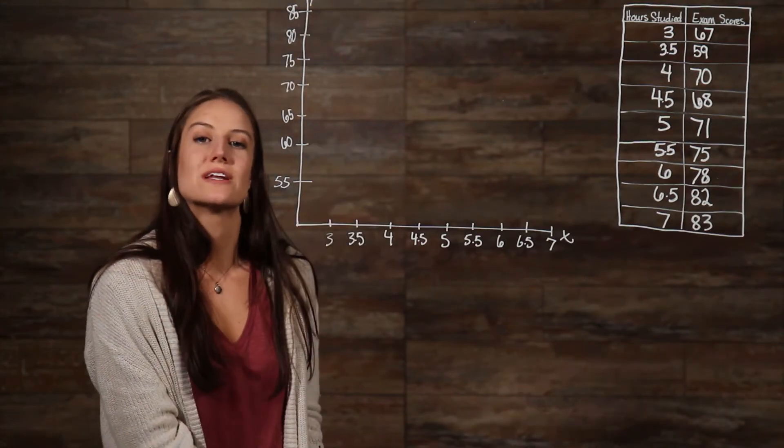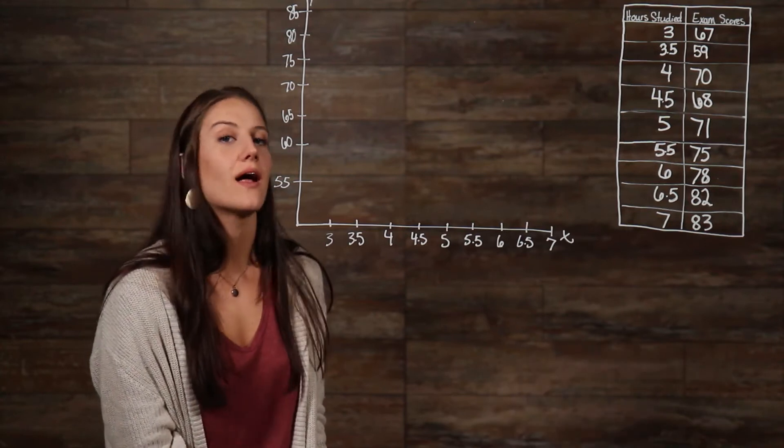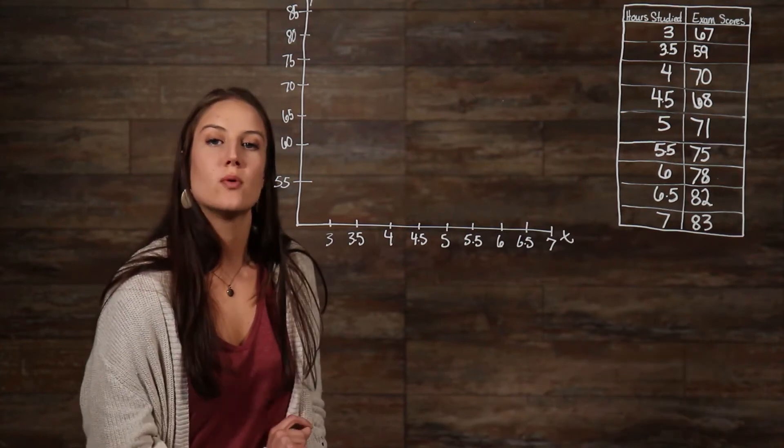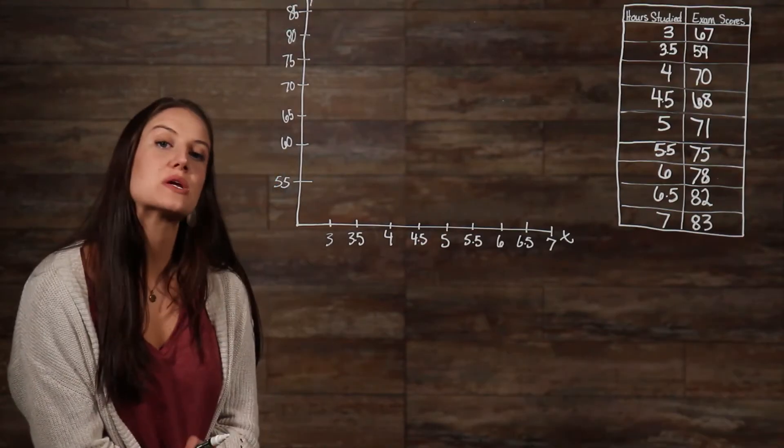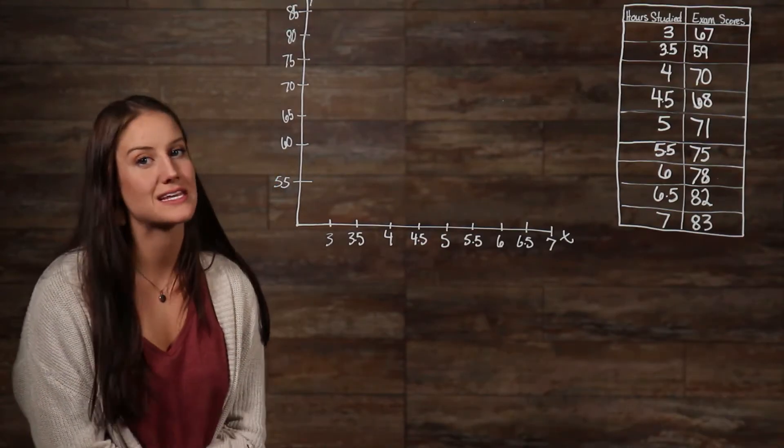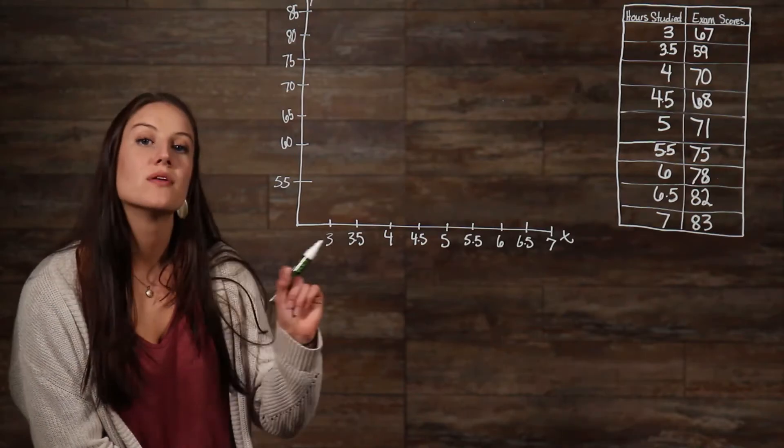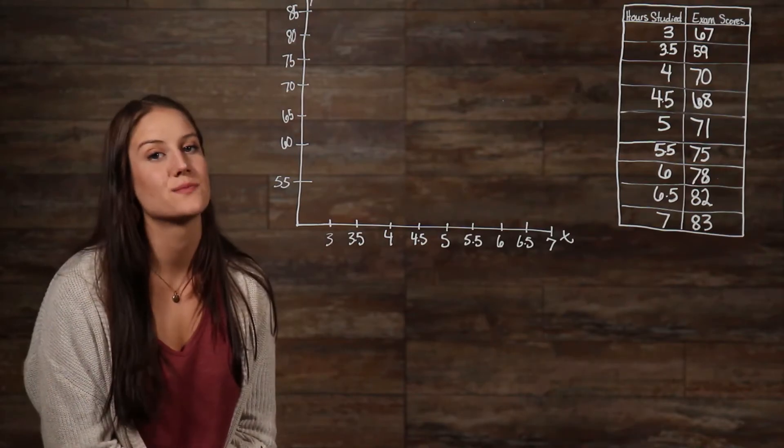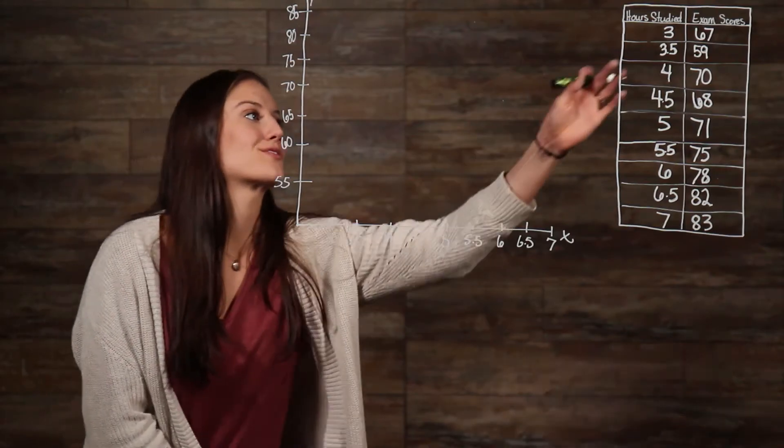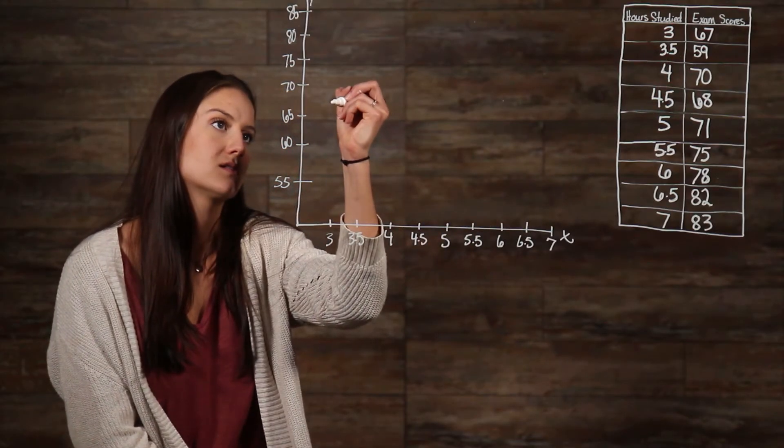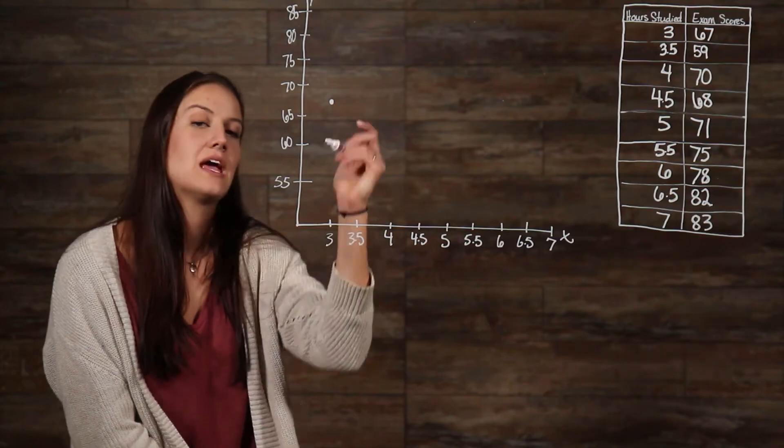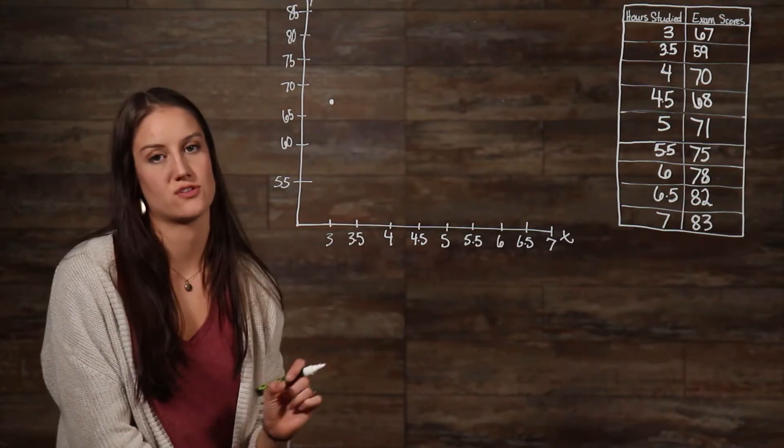Now that we have our numbers on each axis, we can begin to plot our points. Plotting points works the same as it would when plotting a line graph. We find our first number of data points that lies on the x axis, and go up the corresponding amount on the y axis. For our first point we have 3 and 67, so we go 3 and 67, that's about right here. And then we do the same thing for each of our other points.